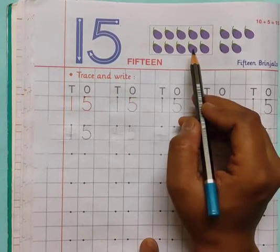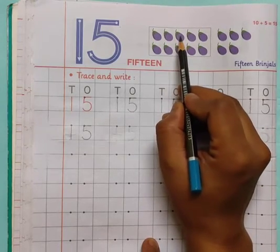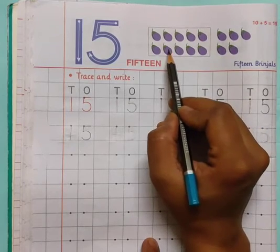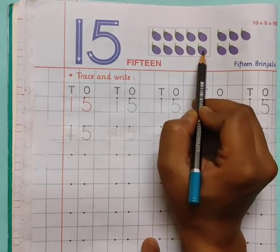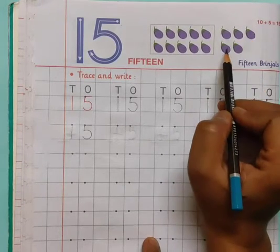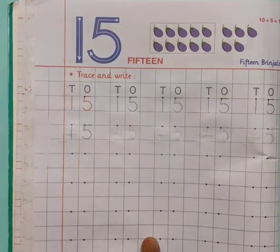Here are 15 brinjals. Count them: 1, 2, 3, 4, 5, 6, 7, 8, 9, 10, 11, 12, 13, 14, 15. 15 brinjals. Okay.